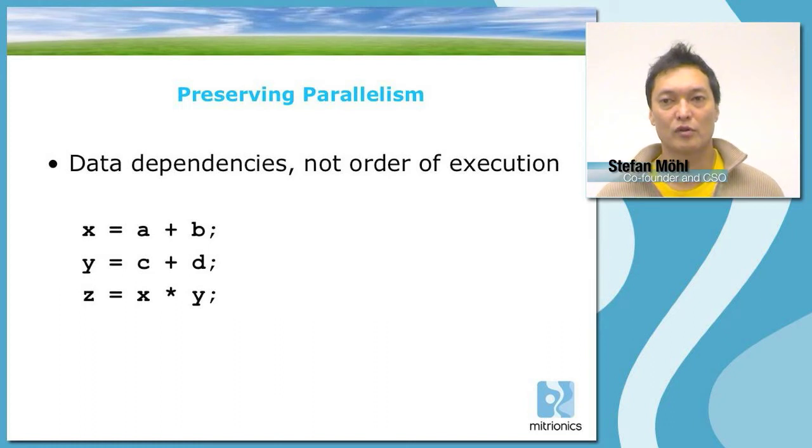In Mitrion C, one of the important points is to preserve parallelism. The first difference between Mitrion C and Standard C is that rather than having an order of execution that follows from the ordering of lines of code in your program, the order of execution is only determined by the data dependencies of your program.